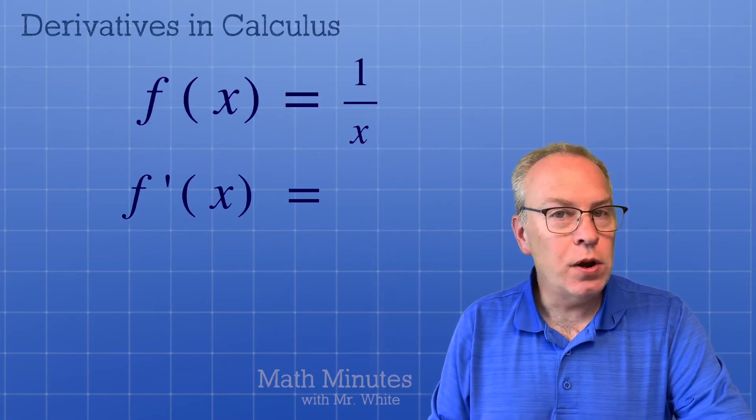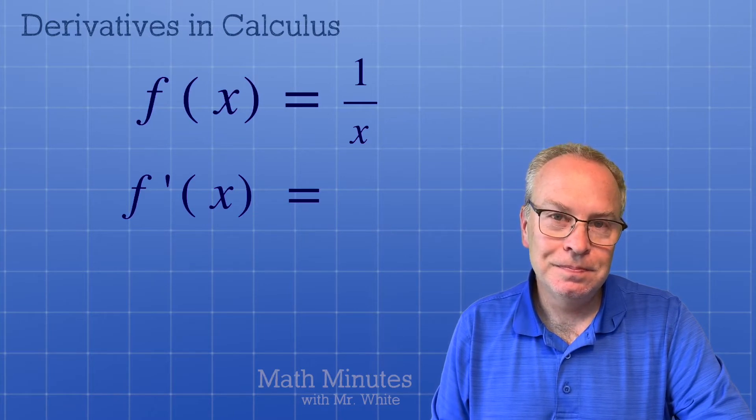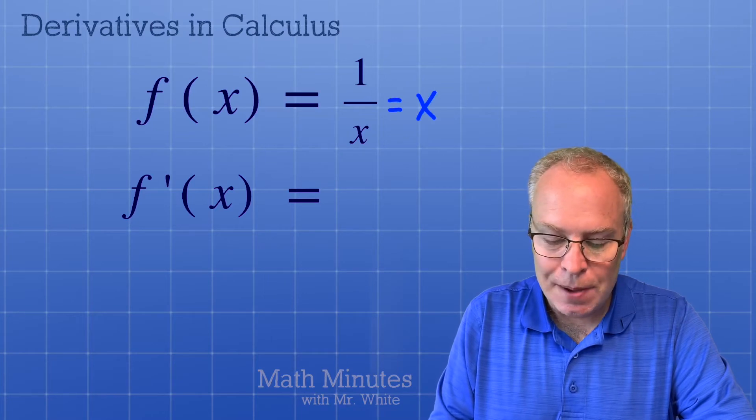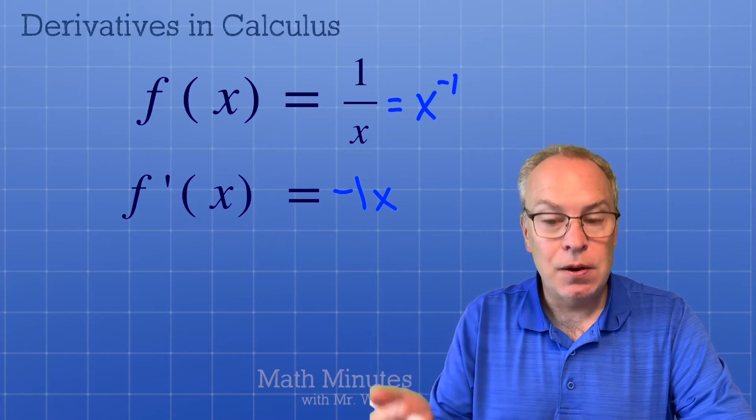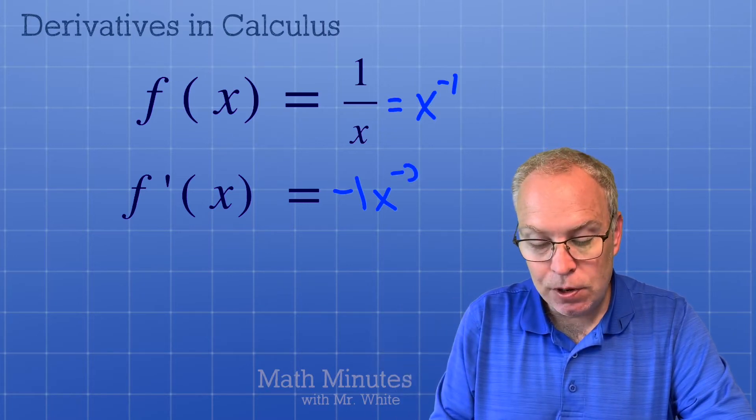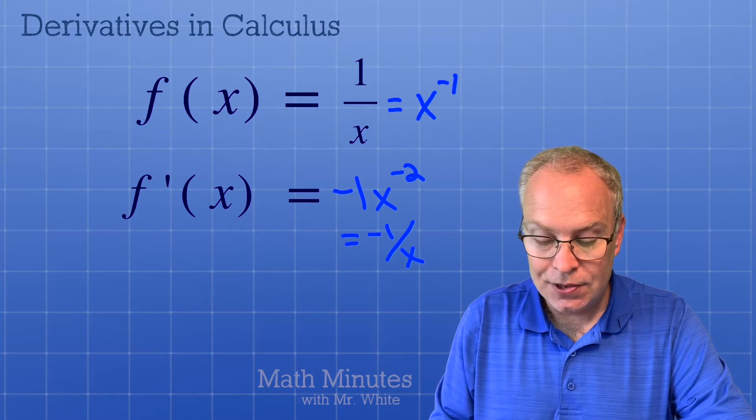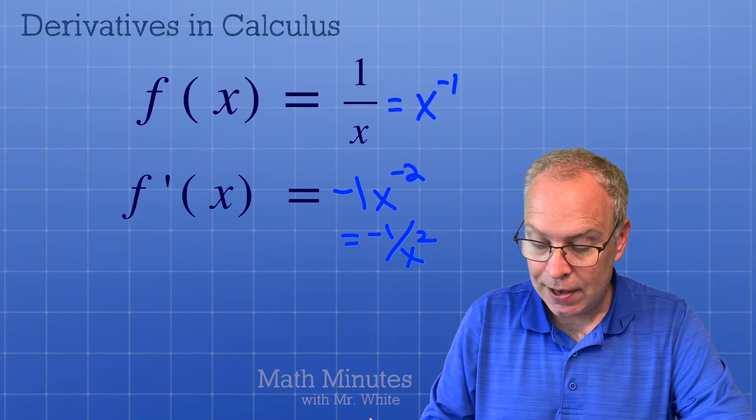What's the derivative of 1 over x? I like to use the power rule on this also, so I'm going to write it as x to the negative first power so that I can throw that exponent out front. And then base stays the same, exponent goes down by one. So the answer is negative 1 over x squared. And that's not a bad one to memorize.